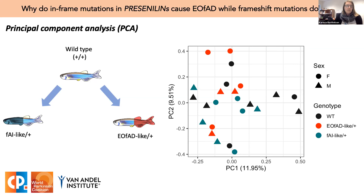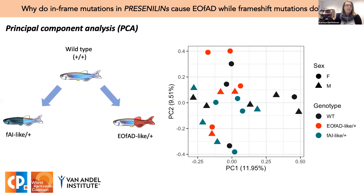Samples with similar brain transcriptomes will cluster together in these plots. If the mutations resulted in widespread transcriptomic changes, we should see three distinct clusters by genotype. However, despite our careful study design to minimize other sources of variation, the majority of the variation is not coming from pre-symptomatic genotype. There might be a little separation across the second principal component, but this explains only about 10% of the total variation. The takeaway is that these mutations have really subtle effects on the brain transcriptome — but this is okay, since these fish model the earliest changes occurring decades before symptom onset in humans.